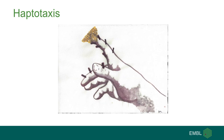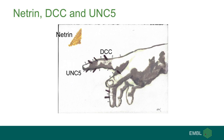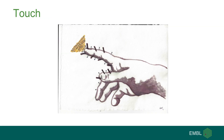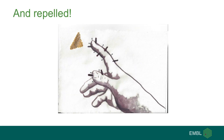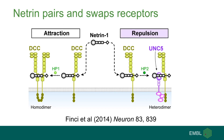The growth cone extends itself over a substrate covered with Netrin. If, in addition to DCC, another receptor called UNC5 is present, the growth cone may get in contact with Netrin, but it leads to repulsion or de-adhesion.